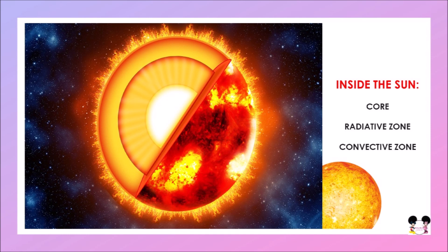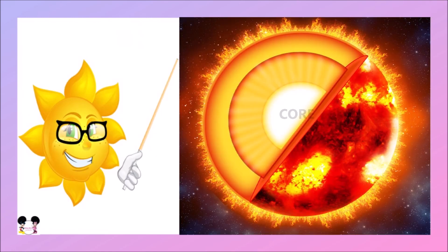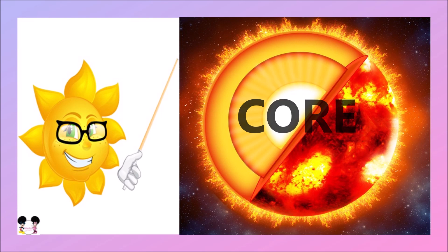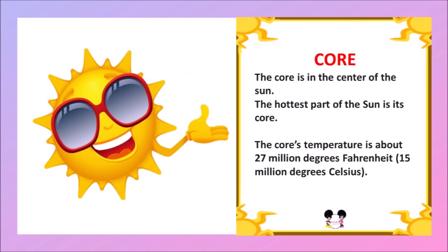Let's discuss about the inner part of the Sun. There are three layers in the inner part. The first one is core. Core is in the center of the Sun, and the hottest part of the Sun is the core. The core's temperature is about 27 million degrees Fahrenheit.